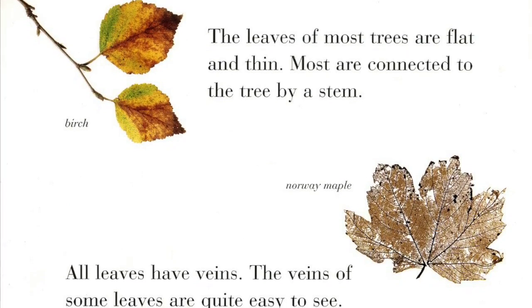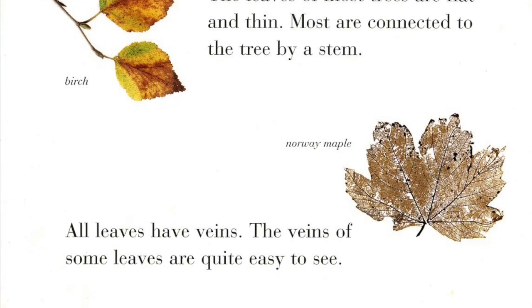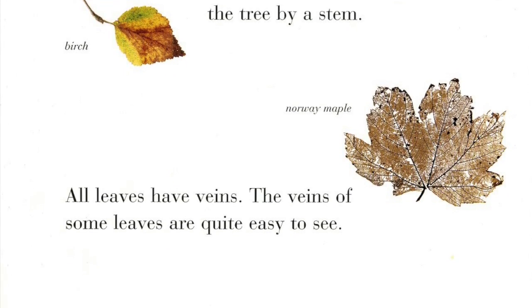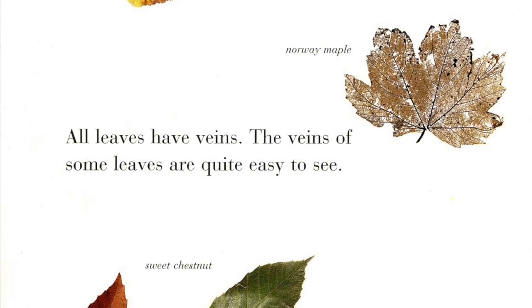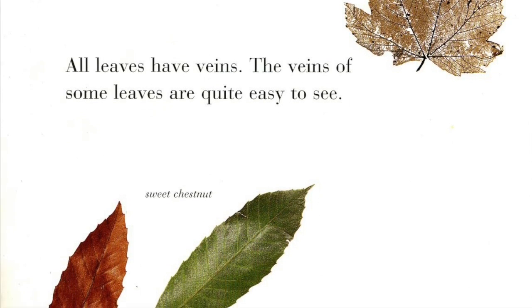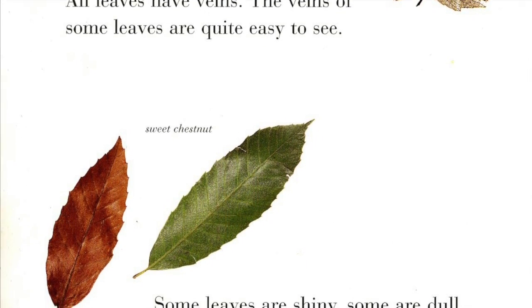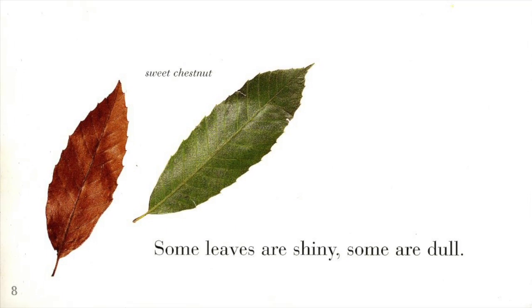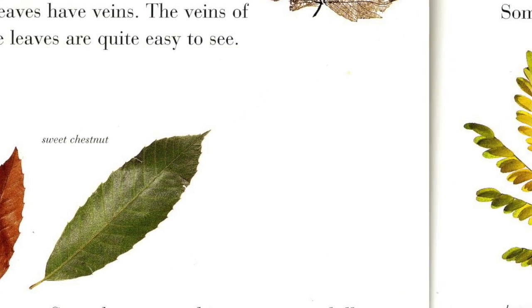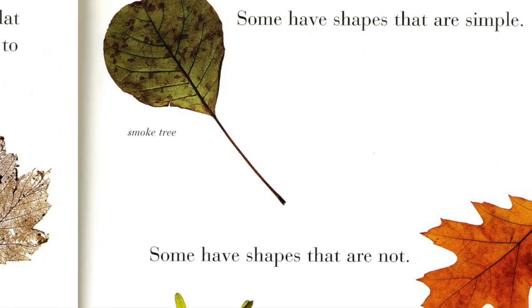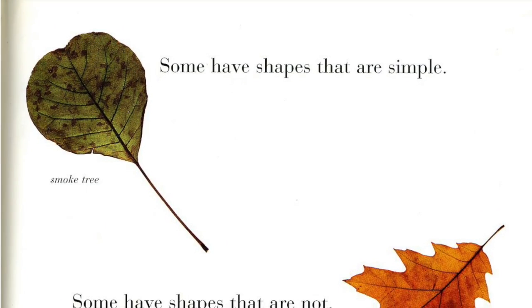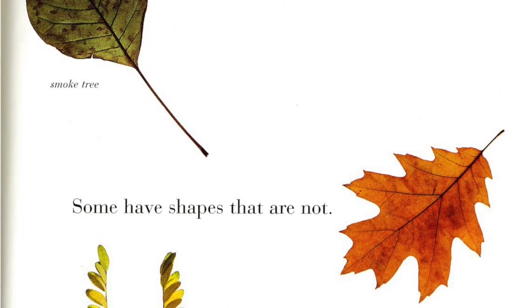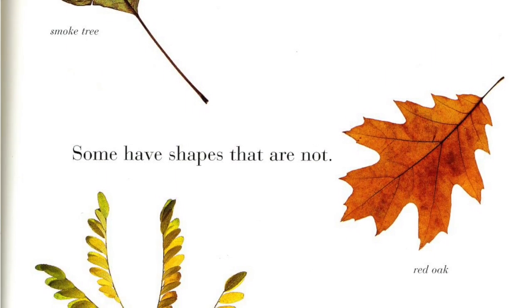The leaves of most trees are flat and thin. Most are connected to the tree by a stem. All leaves have veins. The veins of some leaves are quite easy to see. Some leaves are shiny. Some are dull. Some have shapes that are simple.